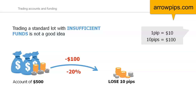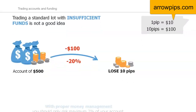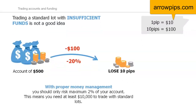To trade with standard lots, you need more capital to be able to withstand losing trades. Ideally, this means that you should have at least $10,000 to start with, in order to be able to adhere to money management rules and stick to risking only a maximum of 2% of your account.